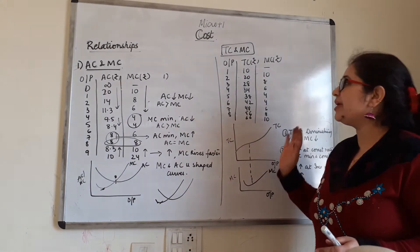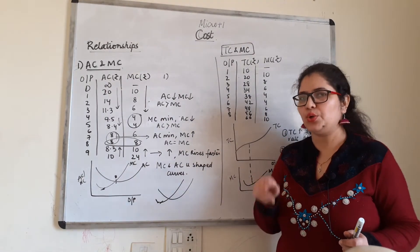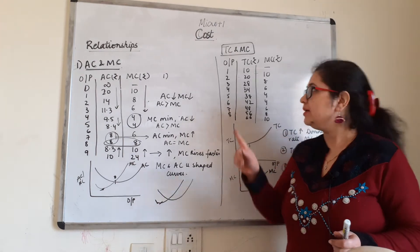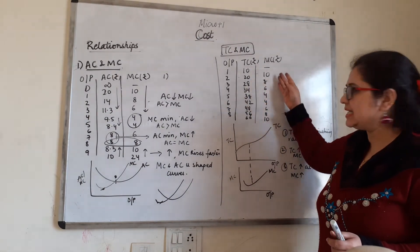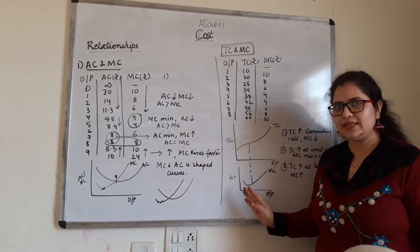Similarly, TC and MC relationship. Define both with formula. We have created the table. MC is also derived from TC. Now we'll focus on the diagram.